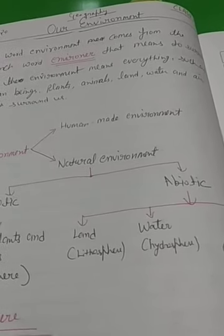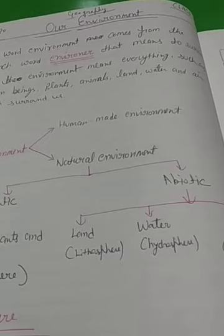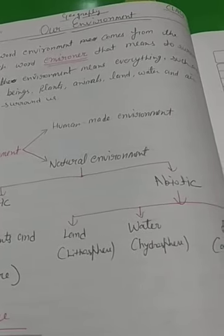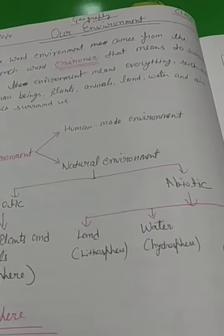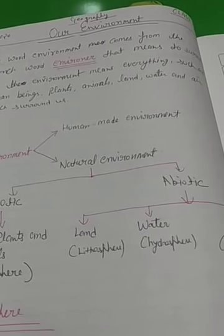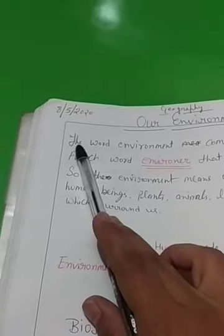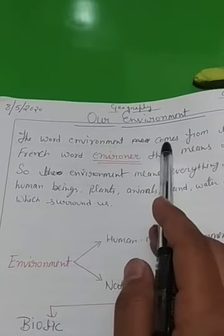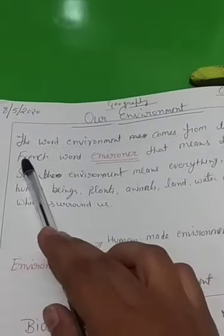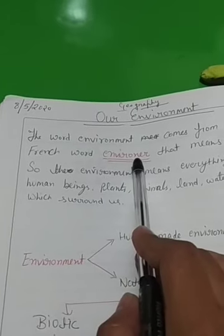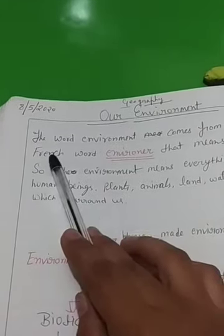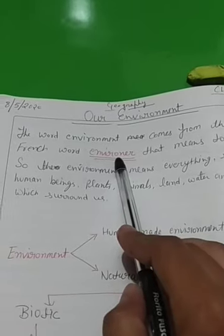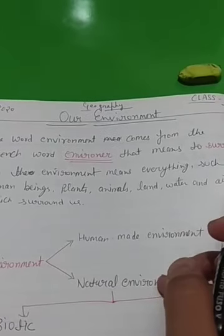Thus, environment is our basic life support system. This is because it provides the air we breathe, the water we drink, the land where we live, and the food we eat. The word 'environment' comes from a French word which means 'surround' or 'neighborhood'.